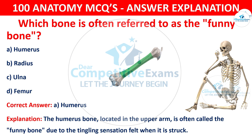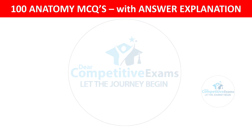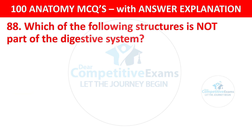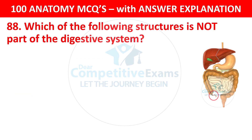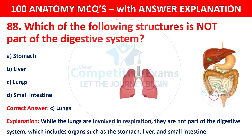Question number 88: Which of the following structures is not part of the digestive system? The options are: Stomach, Liver, Lungs, or Small intestine. The correct answer is Lungs. While the lungs are involved in respiration, they are not part of the digestive system, which includes organs such as the stomach, liver, and small intestine.